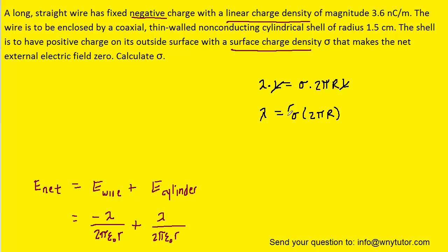So what we'll do is we'll substitute this expression for the linear charge density of the cylinder into the expression that we had developed for the electric field of the cylinder. Now the question notes that the net external electric field is going to equal zero. So we can set the sum of these two electric fields equal to zero and attempt to solve for sigma.